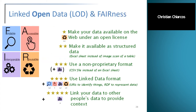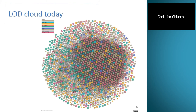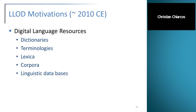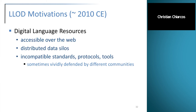You might recognize those criteria because they're closely related to the FAIR principles — indeed, some people view linked open data as a prototypical implementation of FAIRness. The idea of linked open data has been readily accepted in science, and a great number of datasets has been produced as visible in the linked open data cloud. This idea has also found resonance in the language resource and linguistics communities. About ten years ago we already had many digital language resources — dictionaries, corpora, linguistic databases — available over the web, but often as distributed data silos using incompatible standards, protocols, and tools.